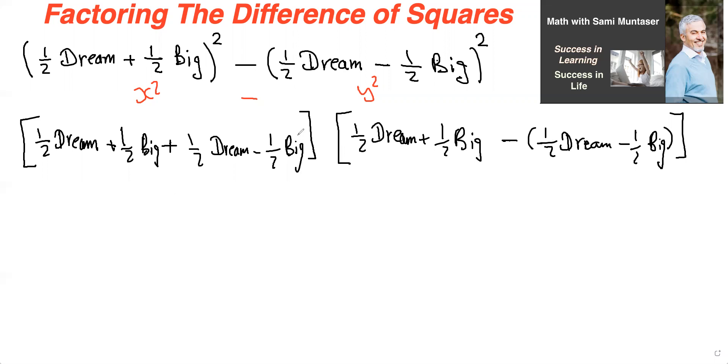So now if you look at this, we know this will cancel with this. And half dream plus half dream, that gives you one dream. And here half a dream minus half a dream will cancel. And half big minus a negative, that's going to become plus. So half big plus half big, that gives you one. Half plus half is one. So that is going to give you big.